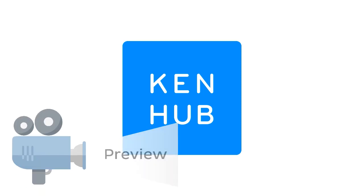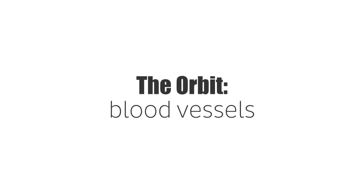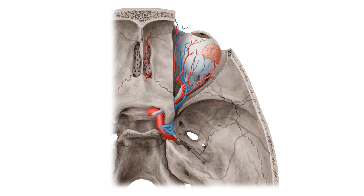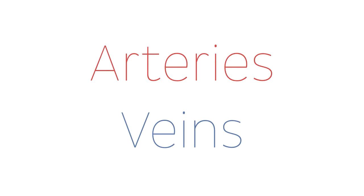Hello everyone, this is João from CanHub and welcome to another anatomy tutorial where this time we're going to be talking about the orbit, specifically the different blood vessels that you can find in the orbit. So what we're going to be doing here on this tutorial is going to this part of your body, specifically the orbit, and we're going to be describing the different arteries and also veins that we find in this area.